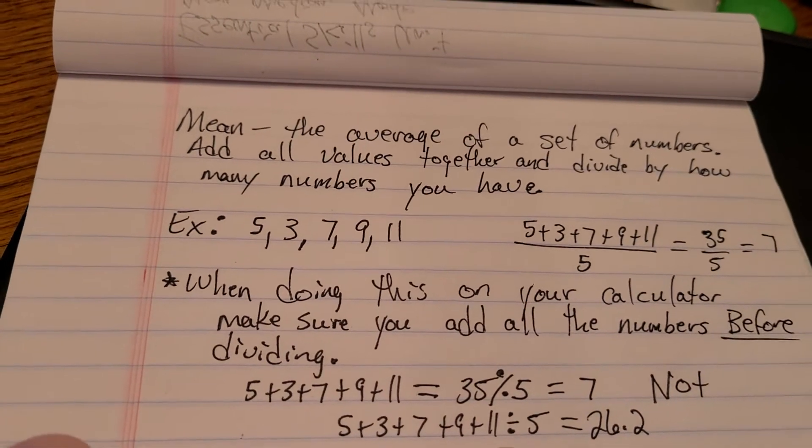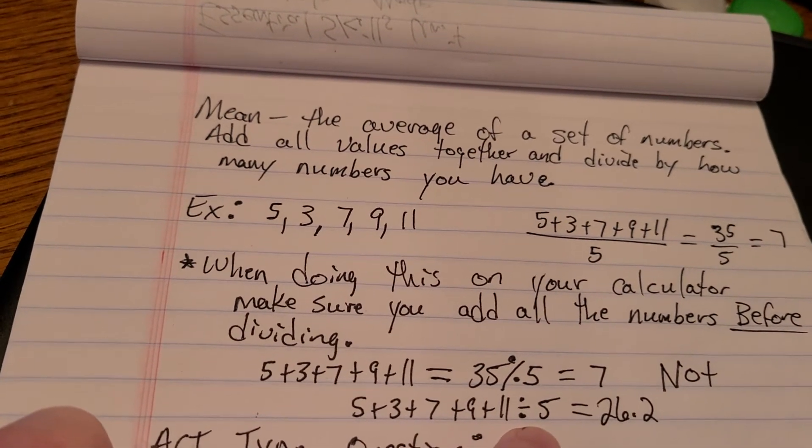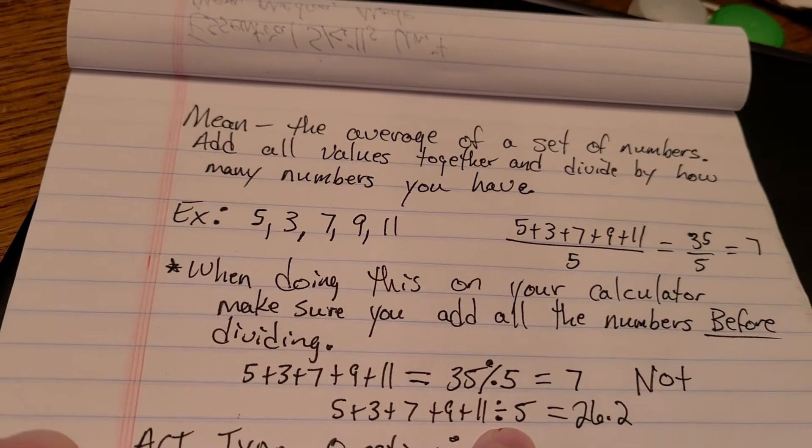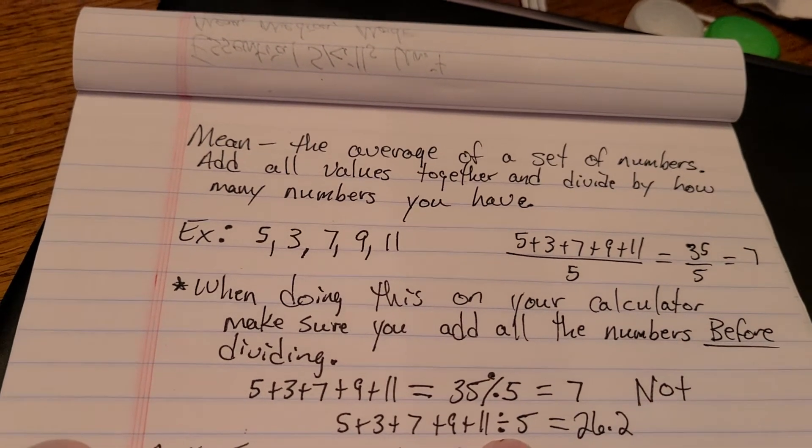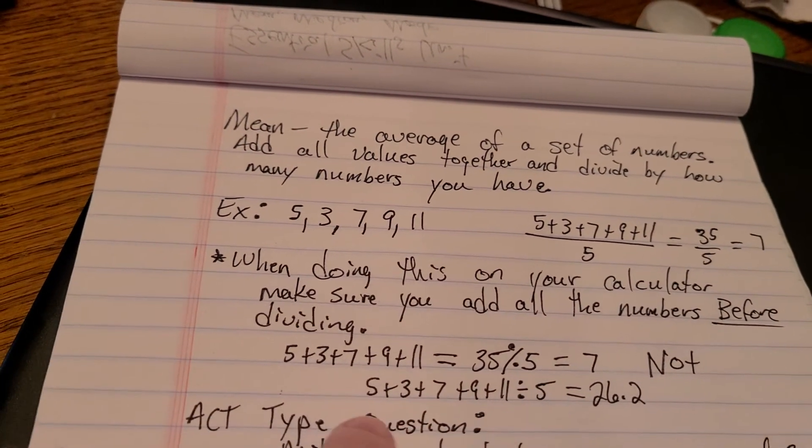But what your calculator did was it took 11 and divided by 5 and then added that value, which is like 1.2, to all these other numbers.